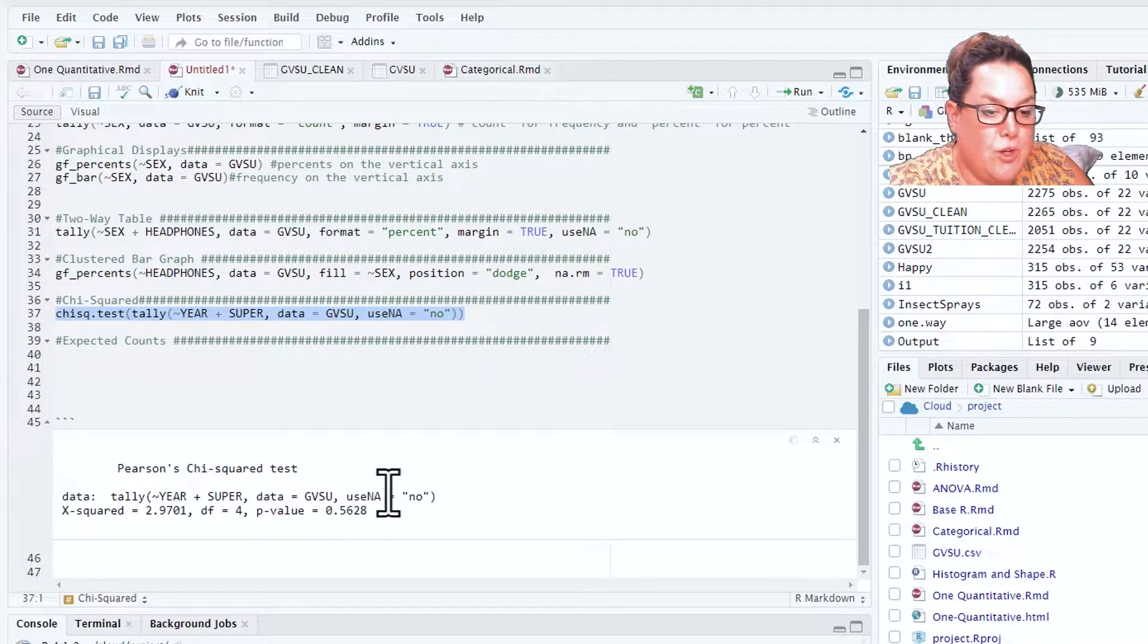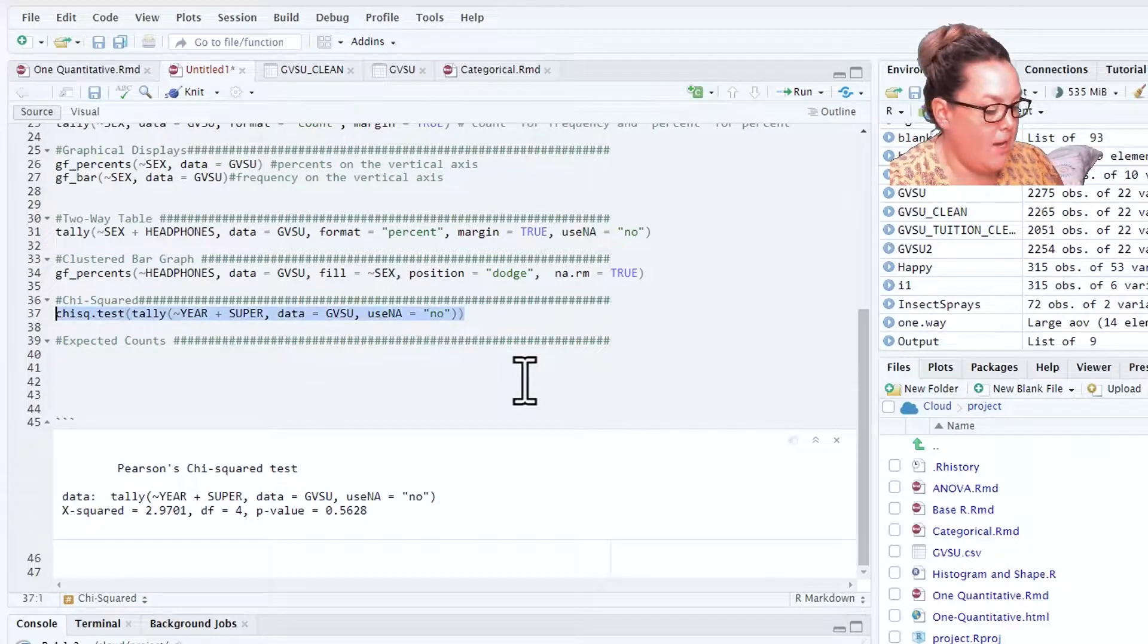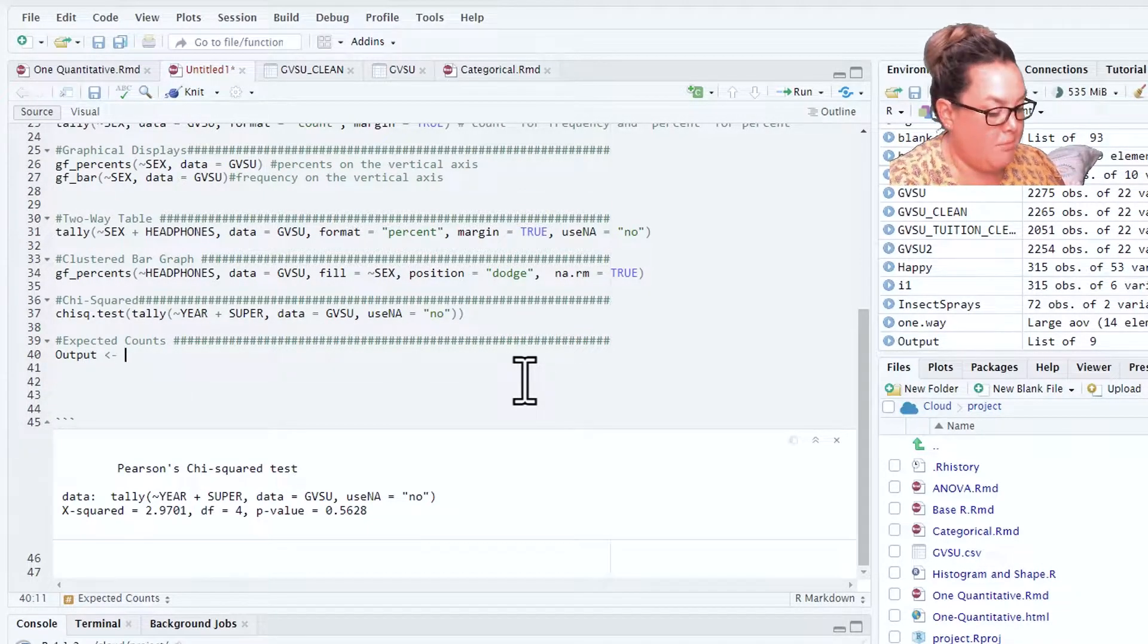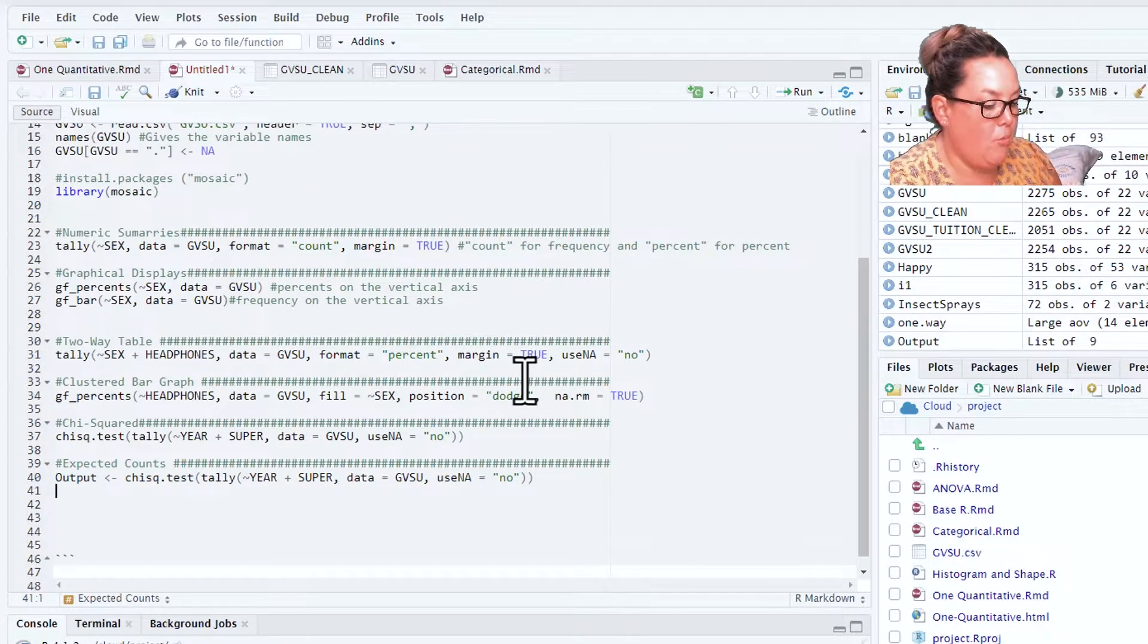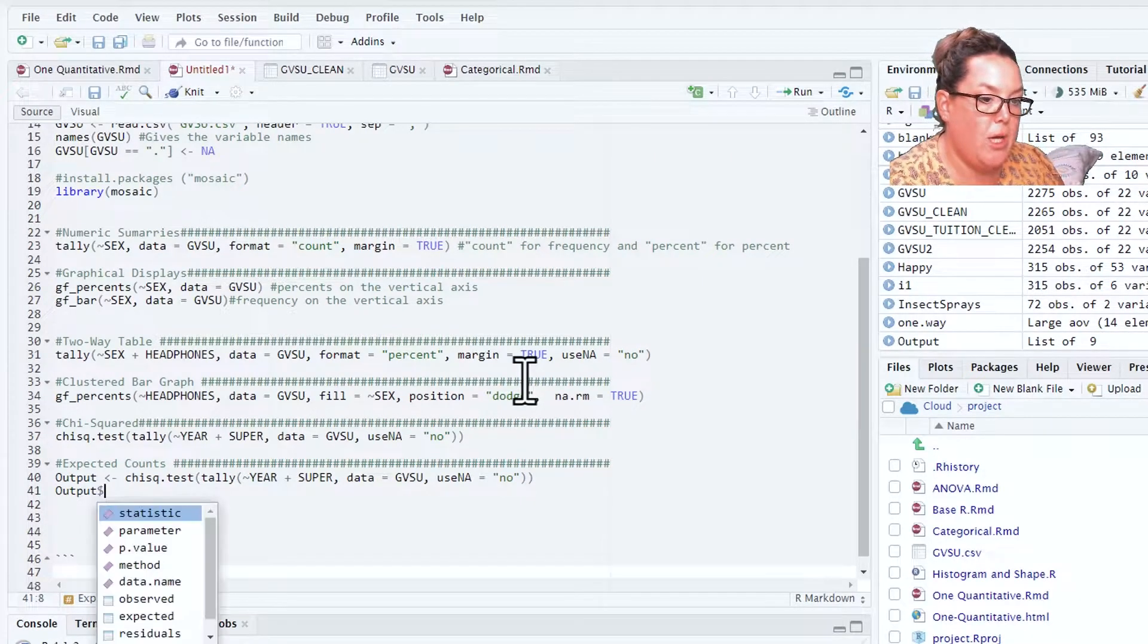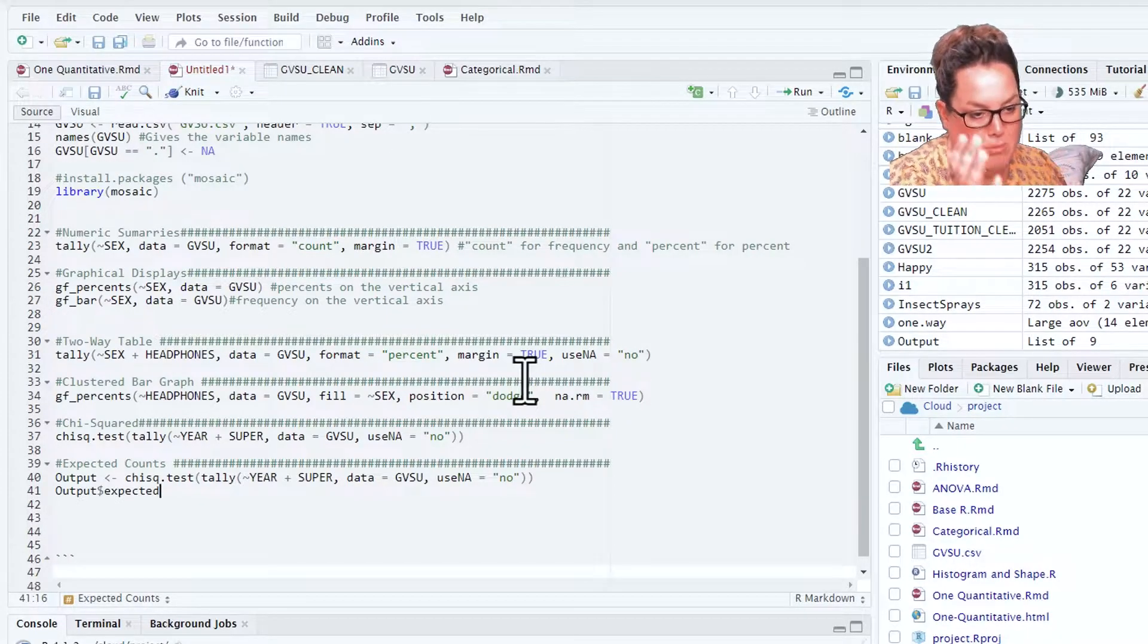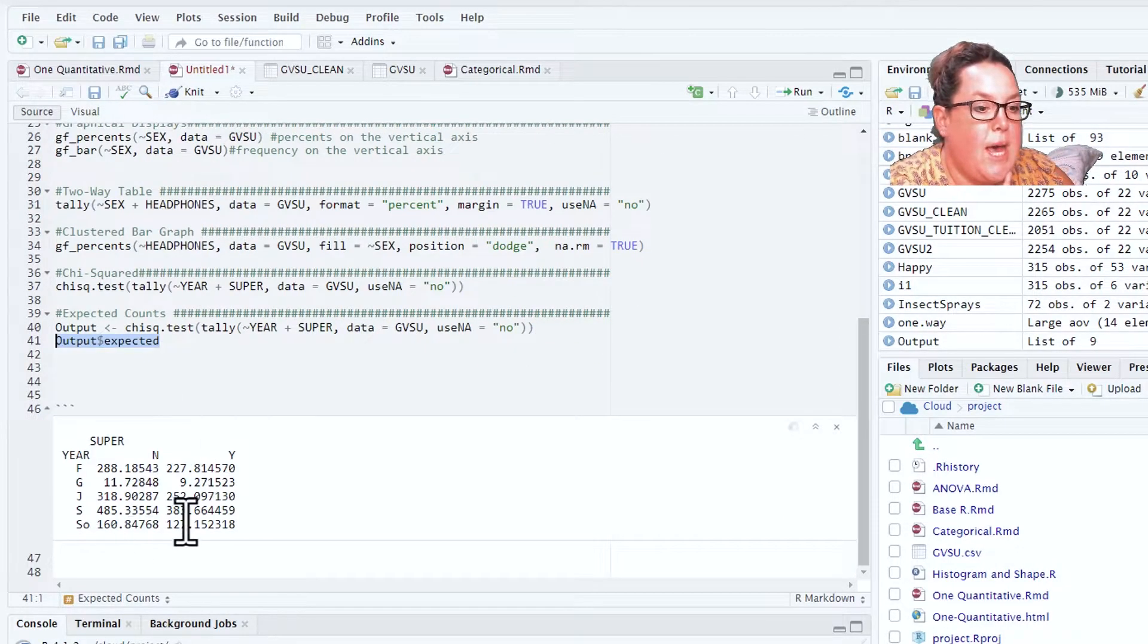That's excellent, we've gotten the chi-squared to be calculated for us. We have degrees of freedom and the p-value. One thing that I would like to add is that I want the expected counts. To do that I'm going to assign that to an object called output and now I'm going to call for that output. When you do the dollar sign, that's telling you that you have this variable or item that you want from the output object. When I do that now you can see I have my expected accounts.